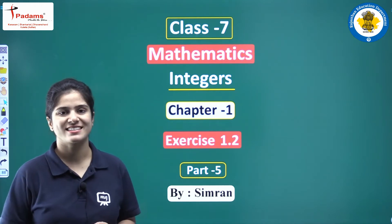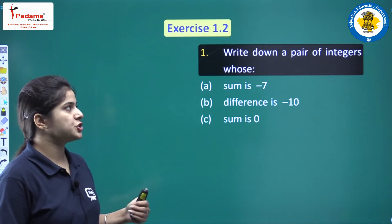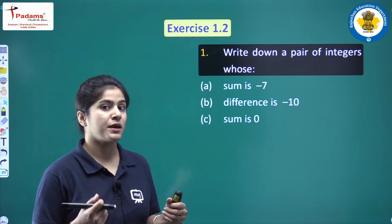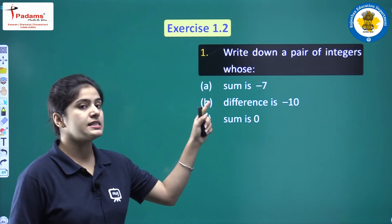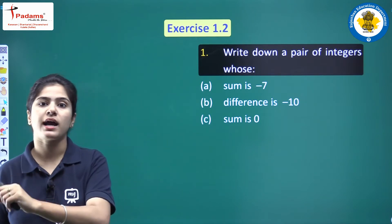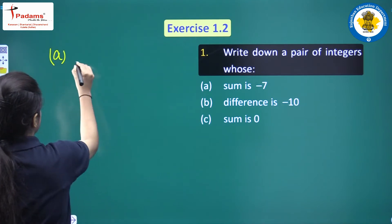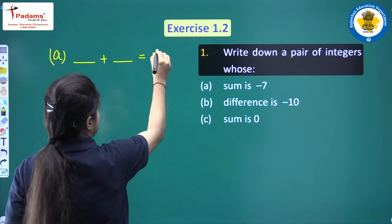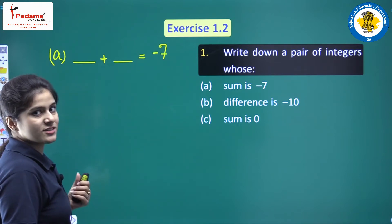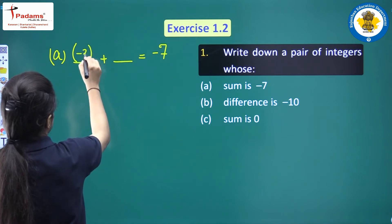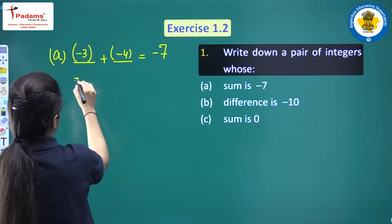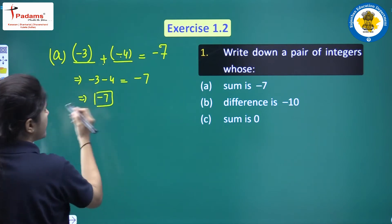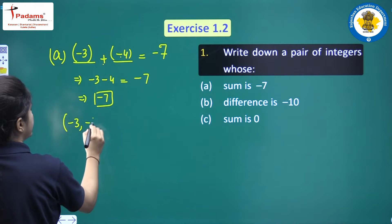Let's start. First question: write down a pair of integers whose sum is minus seven. We also did these things in the examples, so today try to do it by yourself. If we take minus three and minus four, then minus three plus minus four equals minus seven. So the pair of integers is minus three and minus four.